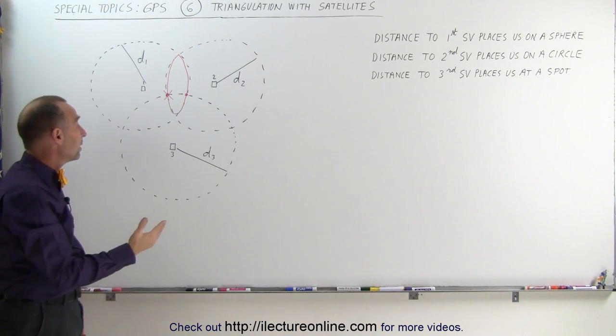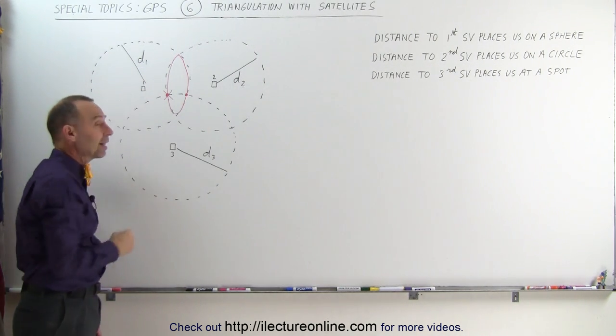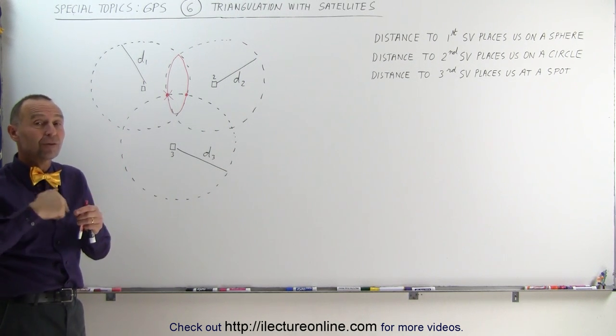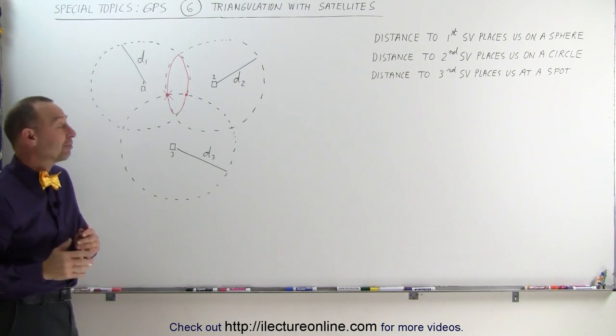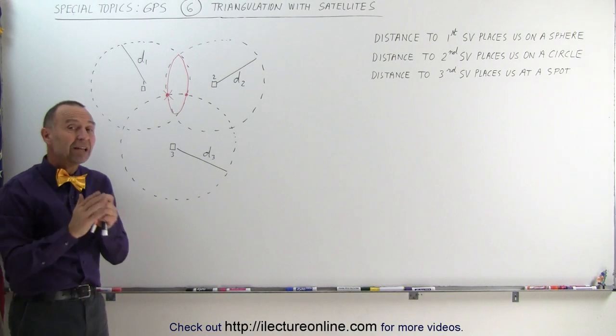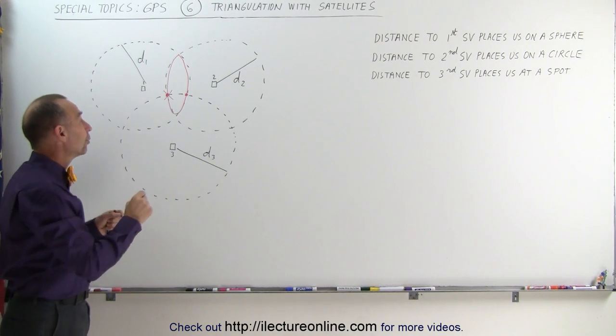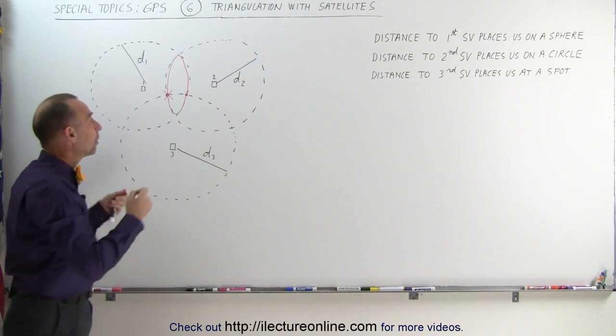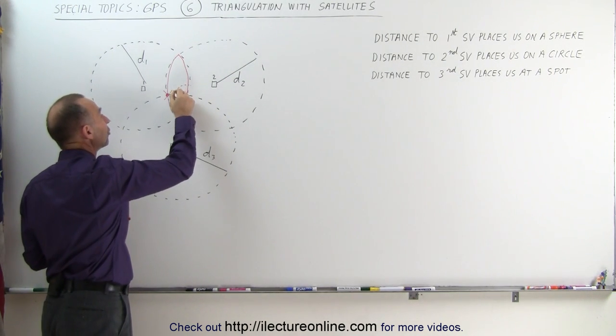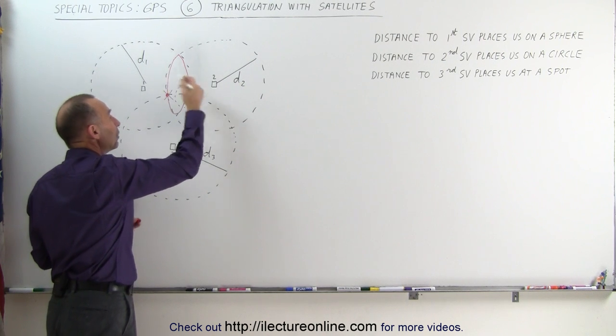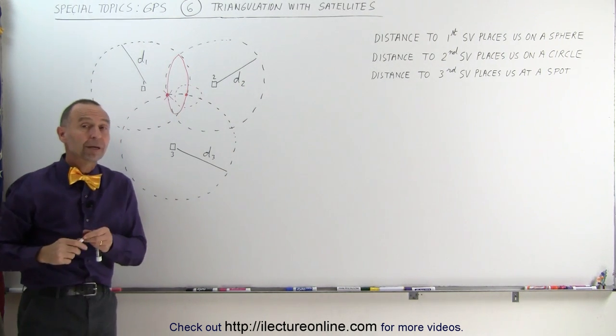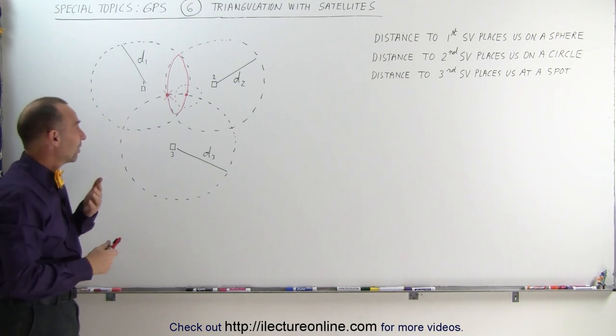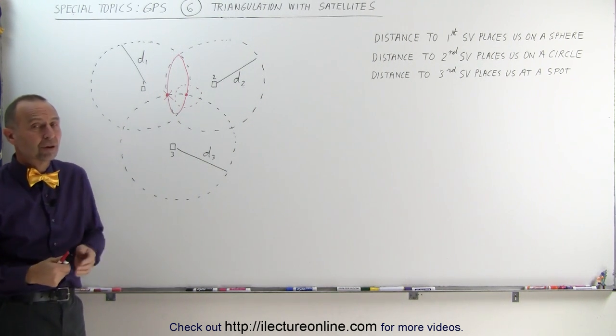The problem with that is we were assuming that we knew the exact positions of the satellites and more importantly, we knew the exact distance from us to the satellite, which is typically not very easy to do. If there's any sort of error or uncertainty in those readings, you will find out that we don't have an exact spot where we could be at. We'll probably have some sort of region where we could be at. And that region could be quite large. It could be hundreds of meters in radius, even thousands of meters in radius, which really would give us a very inaccurate position for ourselves.